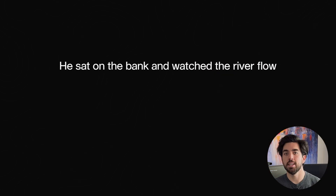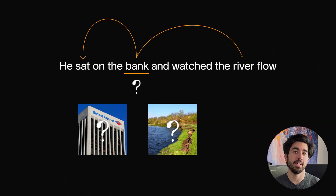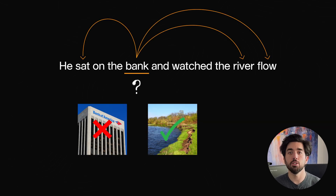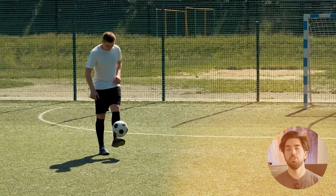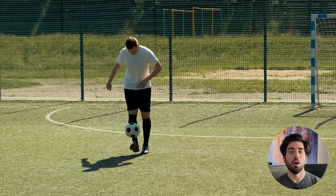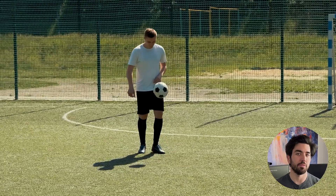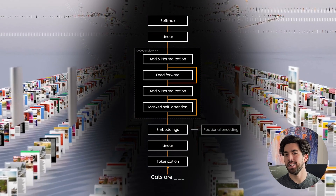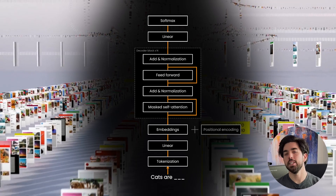If the text says "he sat on the bank and watched the river flow," the attention mechanism helps the model realize that "bank" here is referring to the side of a river and not the financial institution. This is all learned through looking at examples and learning from them — just like our French example, or like learning new movements in specific sports where practice makes perfect. Same thing for LLMs, explaining our huge data requirements of pretty much the entire internet.